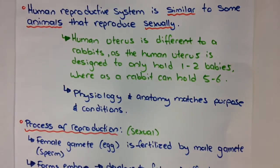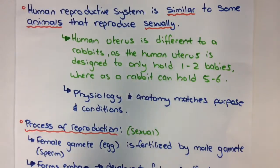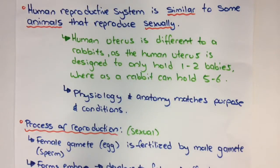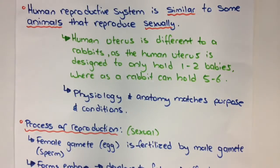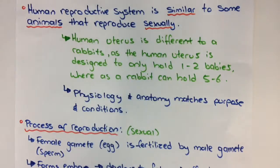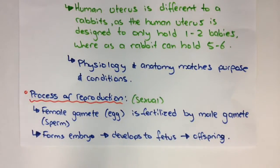The reproductive systems of humans are quite similar to some animals that reproduce sexually. I'm going to talk about humans and rabbits. The uterus is part of the female reproductive system where the egg is fertilized and develops into the offspring. The human uterus is designed to carry one or two babies, whereas a rabbit's can hold about five or six. So the human uterus is shorter than a rabbit's, which has to hold more babies at once — quite interesting how anatomy and physiology change to match the needs of the organism.